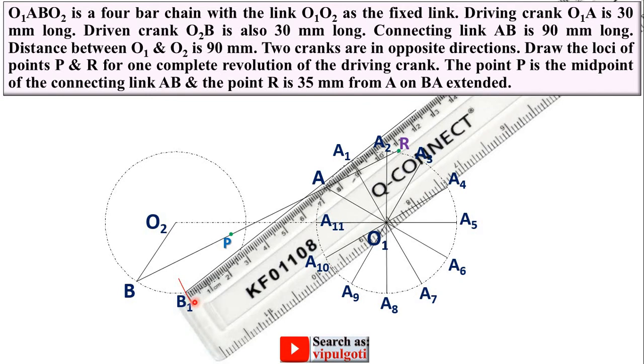Then join B1 A1 and extend it. And then you know that B1 A1 is 90 mm and extended portion is 35 mm. So 90 plus 35, that means 125. So you can locate the point R1 over here.